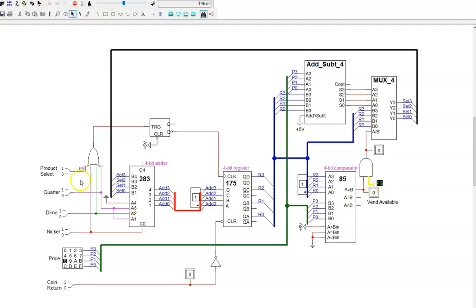As a quick demo, I'll clear the register by pressing coin return. Then I'll add a quarter. Five is now stored in the register. Then I'll add one dime. Seven is now in the register.